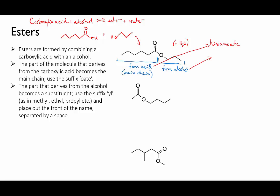The other part, which used to be the alcohol, is named in the same way as an ordinary alkyl substituent. So with three carbons it would be called propyl. And then you put these two parts together and the full name is propyl hexanoate.